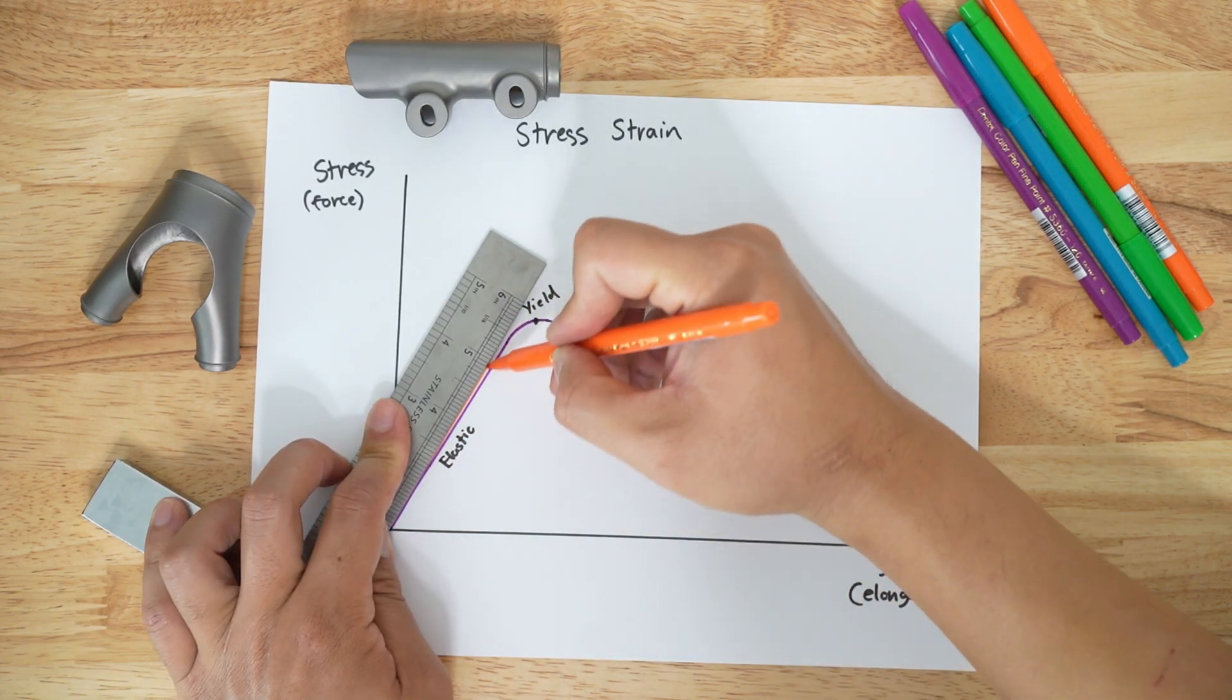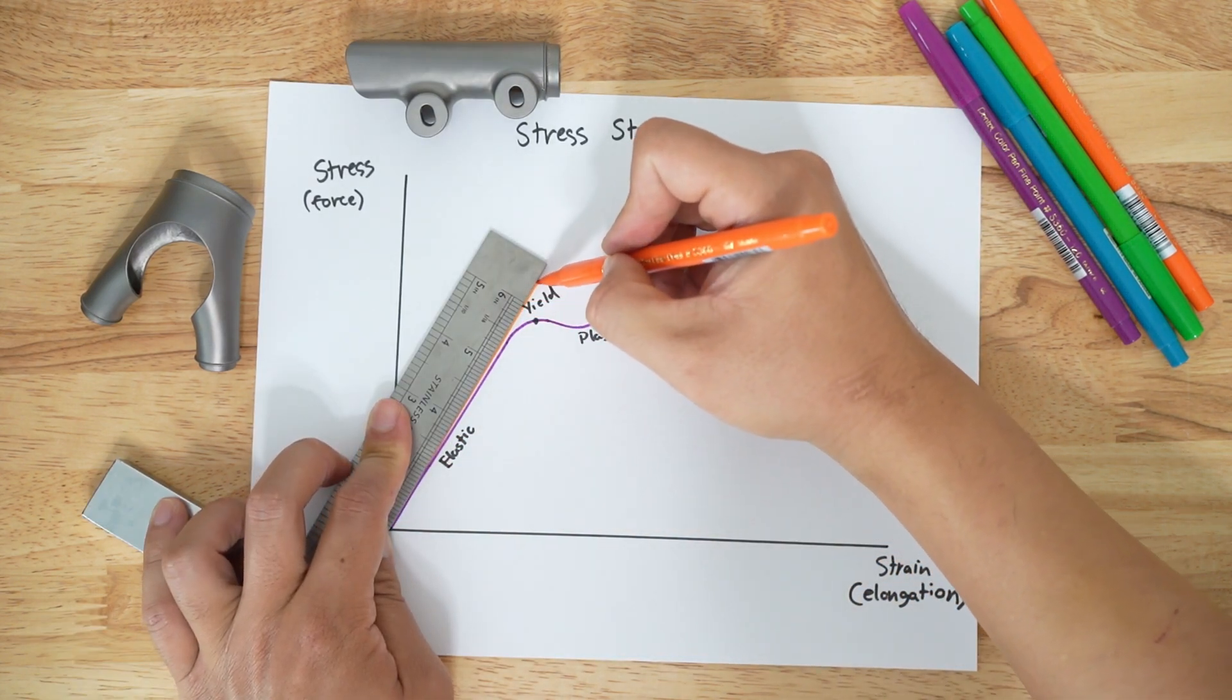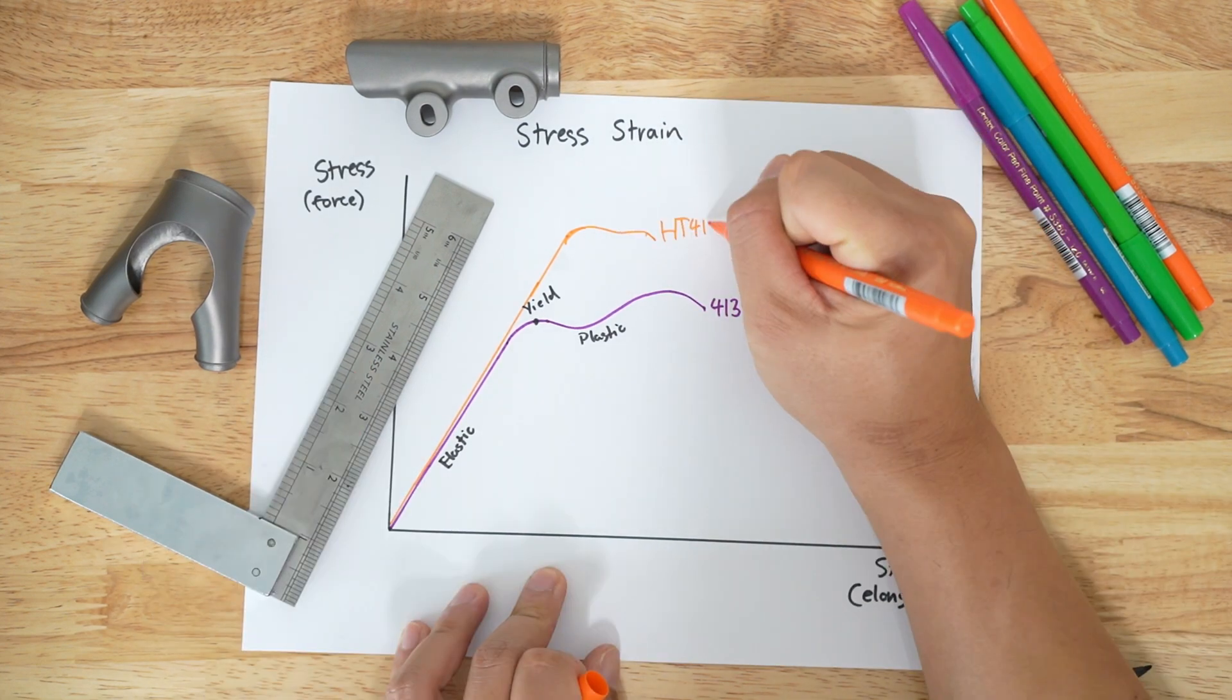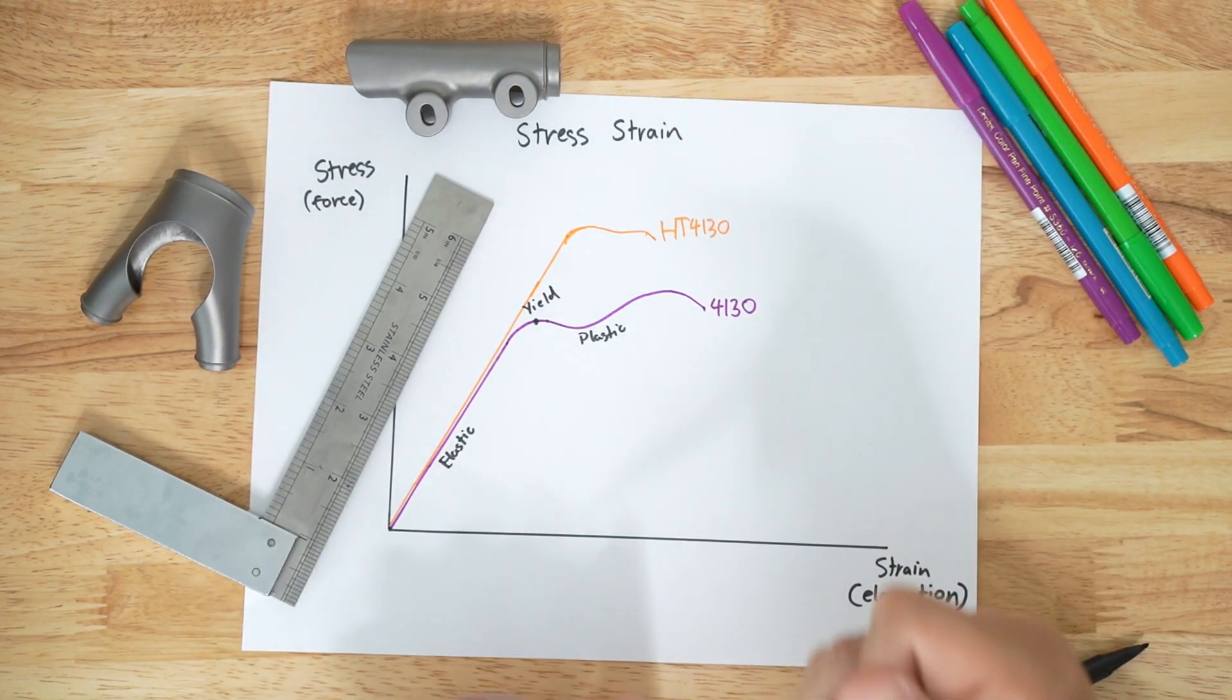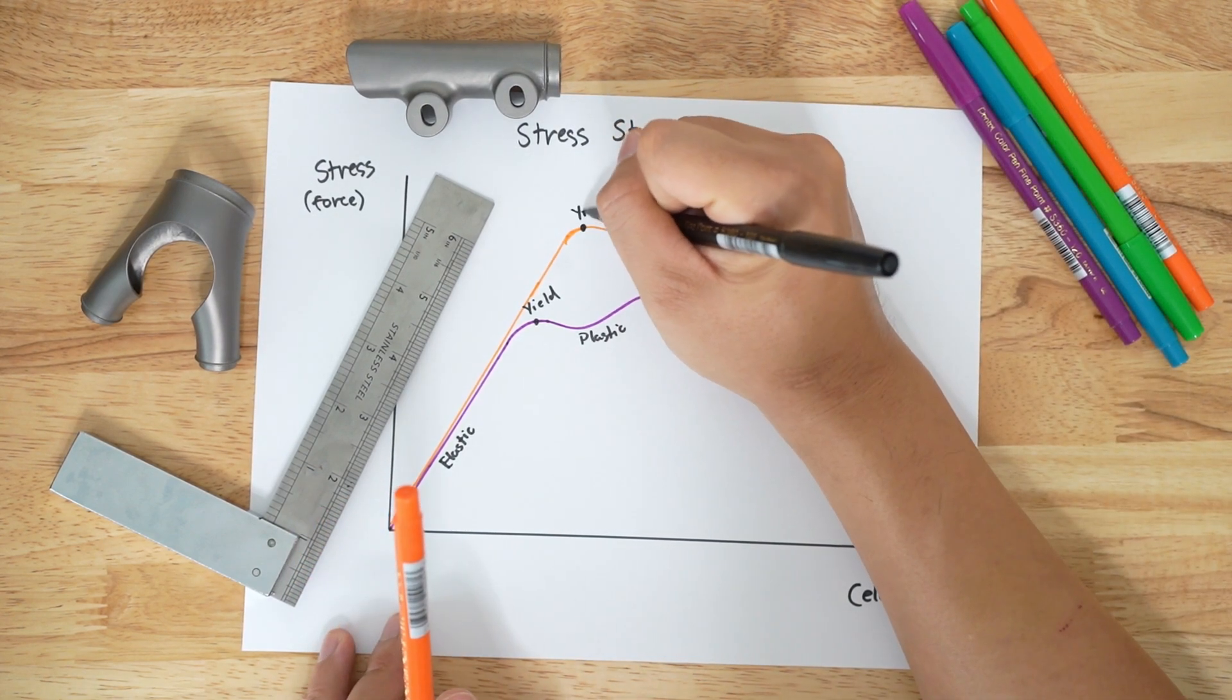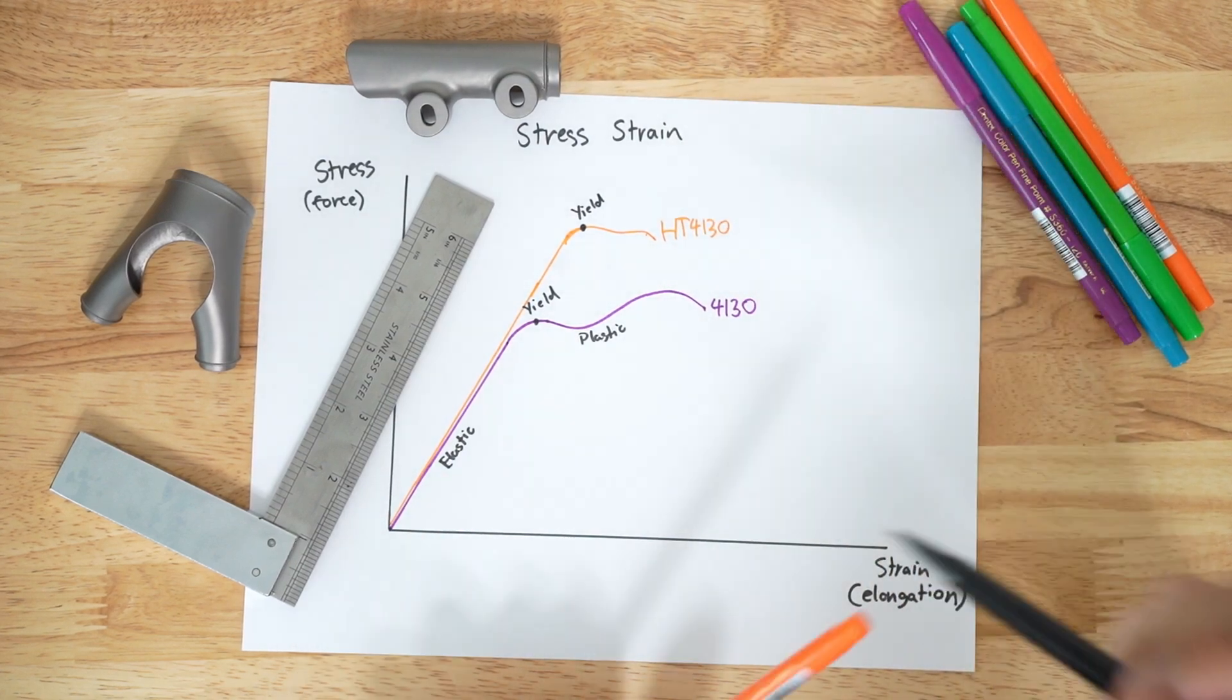Next is heat-treated steel. It has the same stiffness as 4130, so it shares the same slope on the stress-strain curve. Heat treating increases the yield strength, but decreases the plastic deformation region. This is why you should never try to bend or dimple hardened steel tubes.